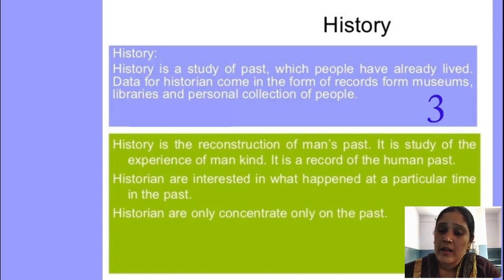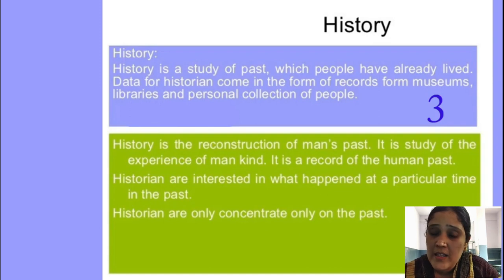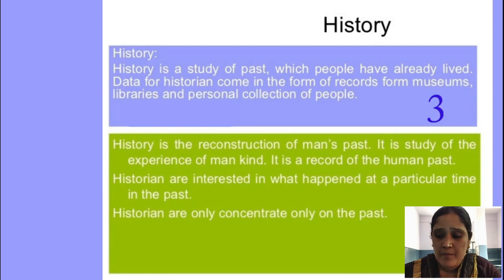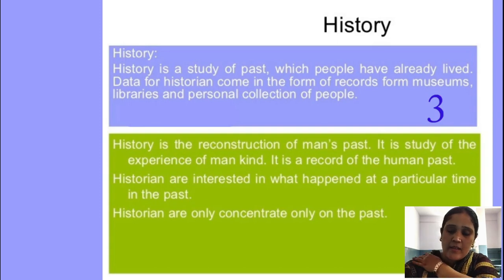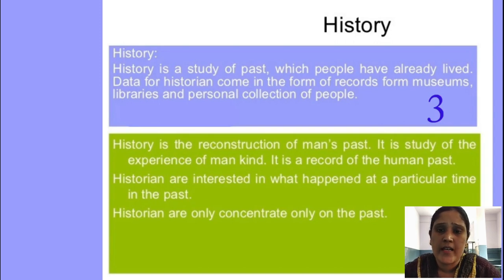History discusses about the journey of mankind — how the evolution of mankind came into existence. Whereas political science deals with concepts and institutions like sovereignty, equality, liberty, and freedom, and the classification of constitutions and different political parties — this comes under the study of political science. That means political science and history play an important role and are interconnected with each other.